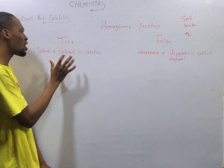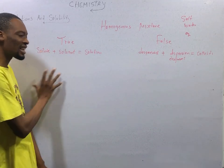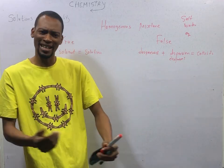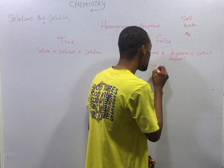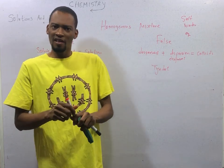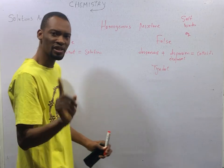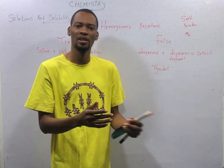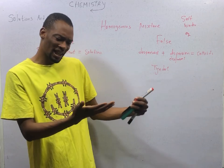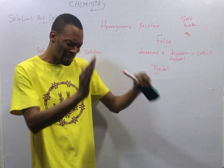A true solution is a homogeneous mixture of two or more substances and it does not scatter light. A false solution has the ability to scatter light — that phenomenon is referred to as the Tyndall effect. The particles making up a true solution are so small that you cannot see them with your naked eye; you can't even see them with a microscope. If you pour sugar in water and it dissolves completely, you may not be able to distinguish the sugar from water — everything blends perfectly.